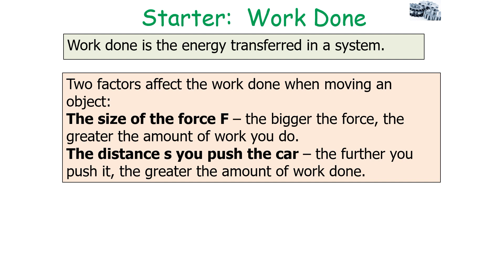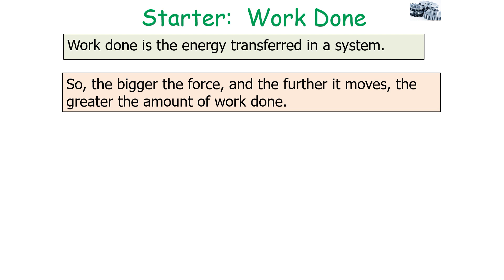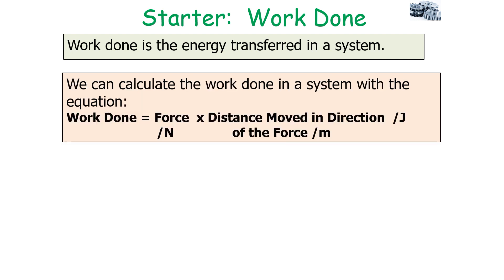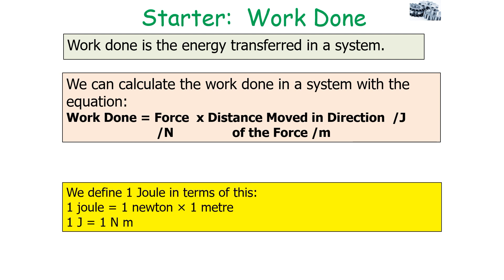There are two factors that affect the work done when moving an object: the size of the force, and the distance s you push the object. The bigger the force and the further it moves, the greater the amount of work done. We calculate work done with the equation: work done in joules equals force in newtons times distance moved in the direction of the force in metres. One joule is equal to one newton metre — it is the energy needed to move one newton through a distance of one metre.